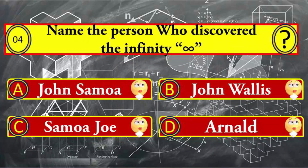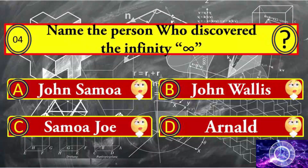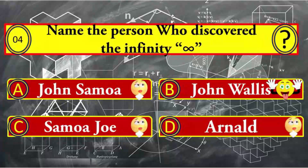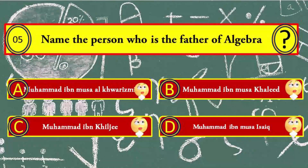Question number four: name the person who discovered infinity. Your options: A) John Somai, B) John Wallace, C) Somai Joe, and D) Arnold. John Wallace is the right answer.